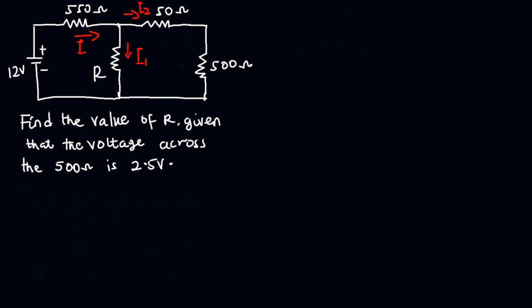To find R, the first thing I will do is solve for I2 first. I2 is the current flowing through the 50 ohms resistor and then the 500 ohms resistor. I can find I2 since I know the voltage drop across the 500 ohms resistor. So I2 is equal to 2.5 volts divided by 500 ohms, which gives us a value of 0.005 Amperes.